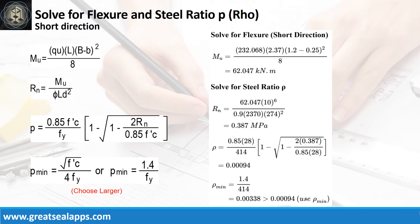At short direction: given ultimate soil pressure equals 232.068 kPa, footing width equals 1.2 meters, footing length equals 2.37 meters, and column side equals 250 mm. The maximum moment is 62.047 kNm. Given resistance factor equals 0.9, L equals 2,370 mm, and D equals 274 mm. The beam design ratio RN equals 0.387 MPa and reinforcement ratio rho equals 0.00094; use rho minimum.